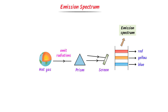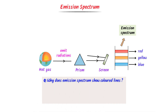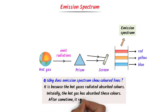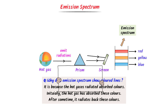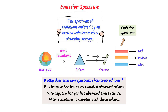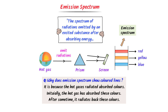Why does an emission spectrum show colored lines? It is because the hot gases radiate the absorbed colors. Initially, the hot gas absorbed these colors, and after some time it radiated them back, which we see as colored lines on the screen. We define emission spectrum as the spectrum of radiation emitted by an excited substance after absorbing energy. Emission spectrum consists of emitted colors radiated back by a substance like hot gases.